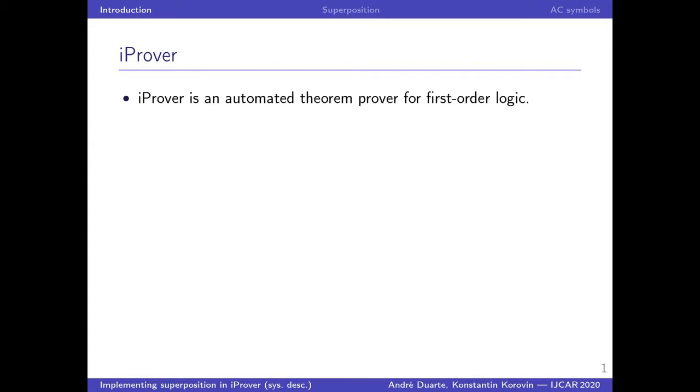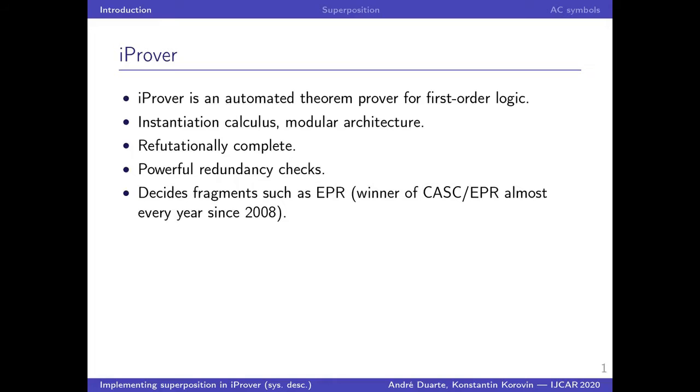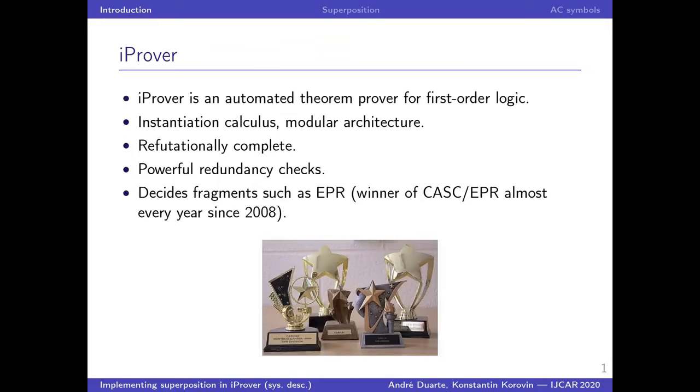iProver is an automated theorem prover for first-order logic, and it's mainly based on an instantiation calculus called instgen. However, it has a modular architecture that supports running multiple calculi in a schedule. It is refutationally complete for first-order logic, and it also decides certain important fragments such as EPR.